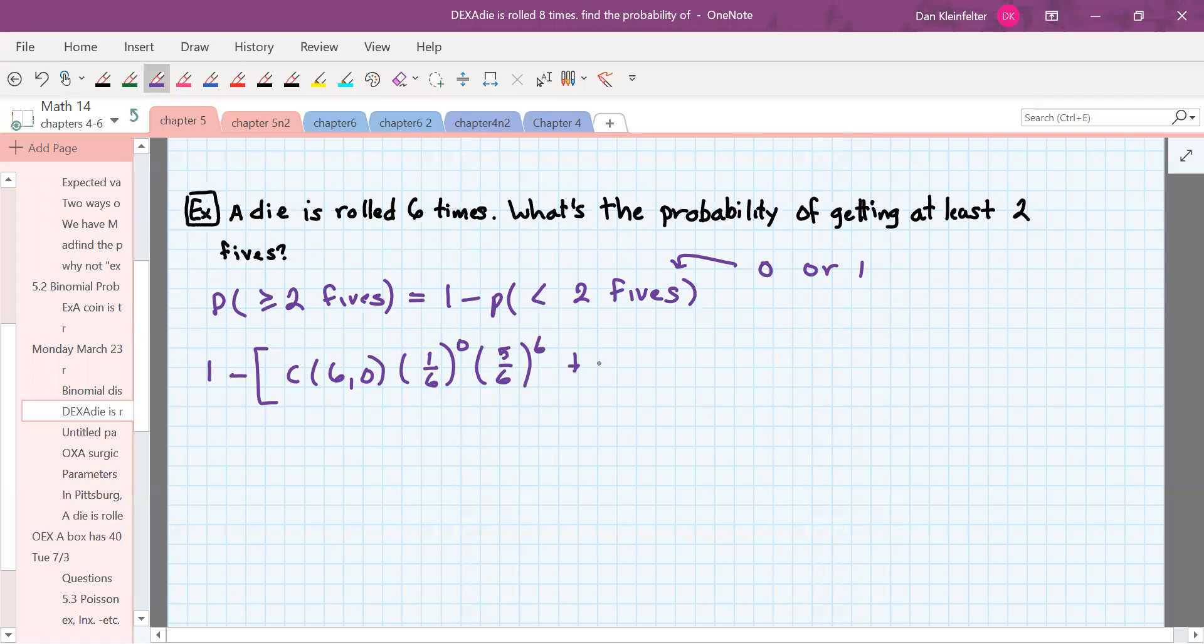Then one five out of the six rolls, we want one five. One sixth chance to get a five that occurs once. Five sixth chance to not get a five and that occurs the remaining five times.